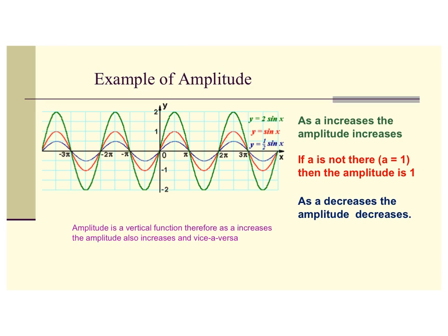The green line is y equals 2 sine x — that is an amplitude of 2. Notice it's going all the way down to negative 2 and up to 2. It's a big, tall one. One graph has an amplitude of 1, going half as far up and down. And our blue one has an amplitude of 1 half, so it's flattened out — very small. This is a sine curve because it's going through zero, zero.